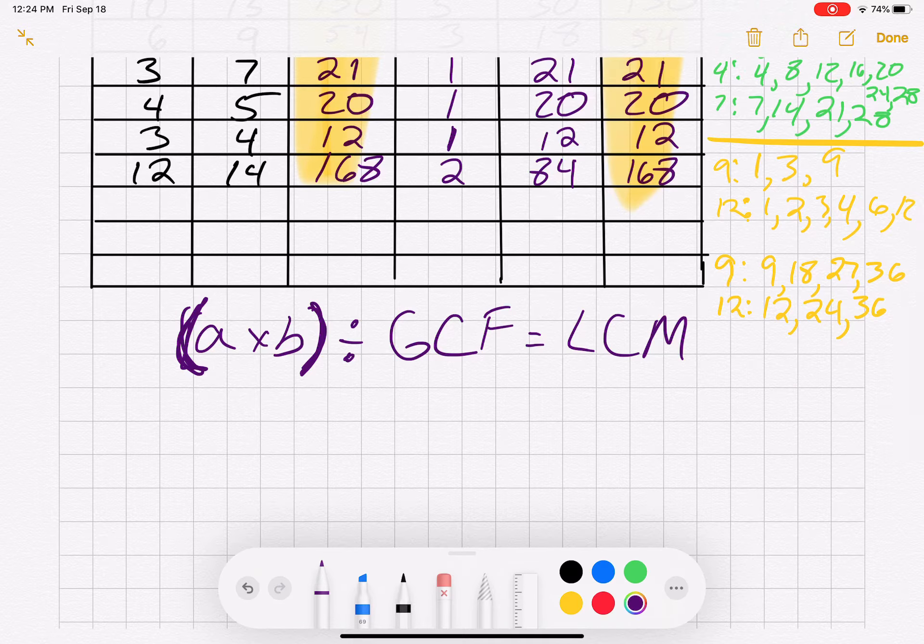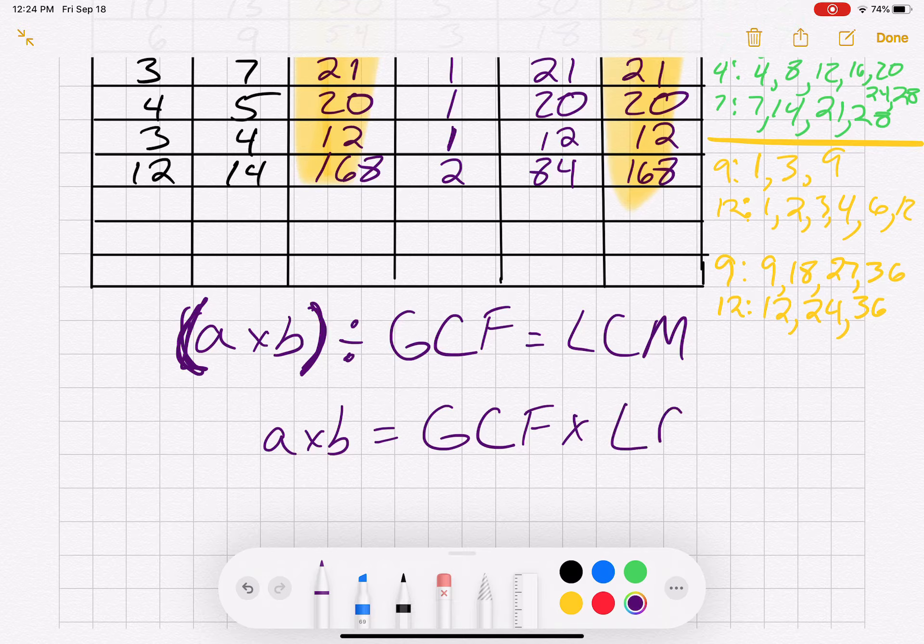So what we originally said was A times B is equal to the greatest common factor times the lowest common multiple.